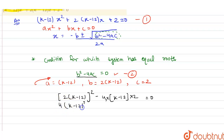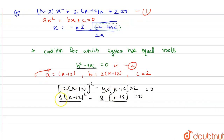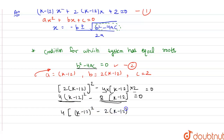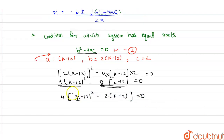Opening the bracket: 4(k minus 12) squared minus 8(k minus 12) equals zero. We can take 4 as a common factor from both terms. Taking 4 common gives: (k minus 12) squared minus 2(k minus 12) equals zero, and the 4 goes to the right-hand side giving zero.